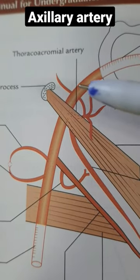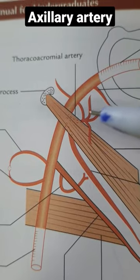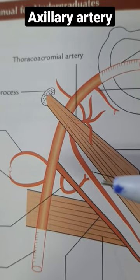The four branches of the thoracoacromial artery are the acromial branch, clavicular branch, deltoid branch, and pectoral branch. Then you have the lateral thoracic artery.